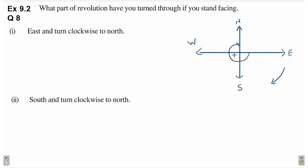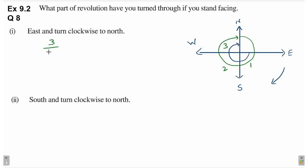Total kitne parts cover kiye humne revolution ke? This is one complete revolution — complete 360 degree jab revolve karo toh usko bol dete hain one complete revolution. Humne ab one complete revolution ke 3 parts cover kiye hain. One, two and three. So hum parts of revolution ko yahan par kaise represent kar sakte hain? Three parts we covered out of four parts. Toh fraction kya banega? Three by four.